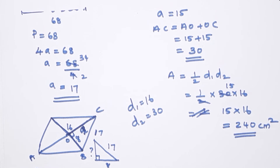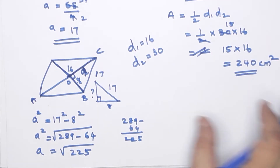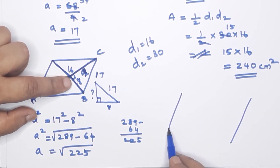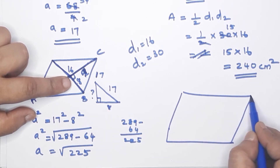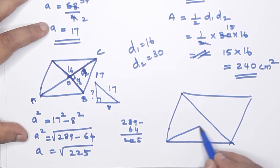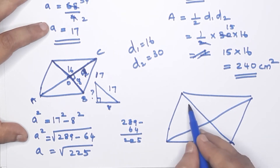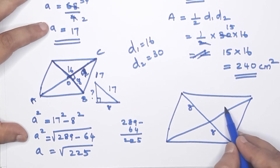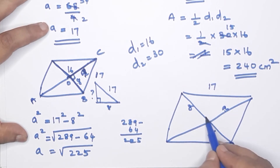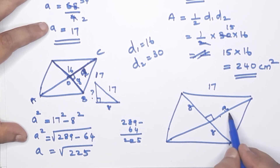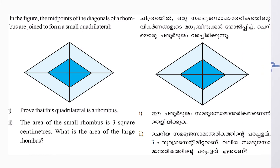To recap the diagram: this is a rhombus with one diagonal bisected into 8 and 8, the side is 17, and this forms a right triangle with the half-diagonal being 15.